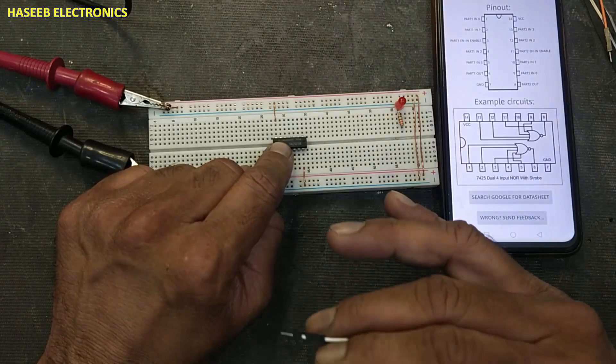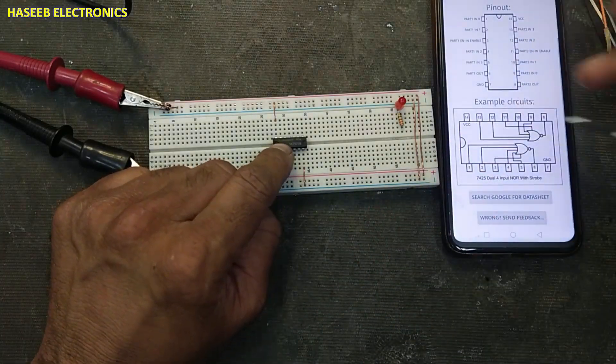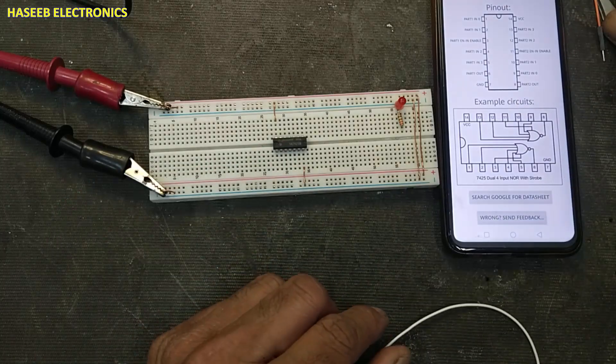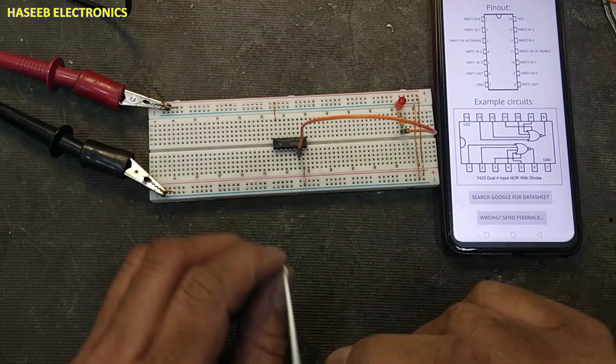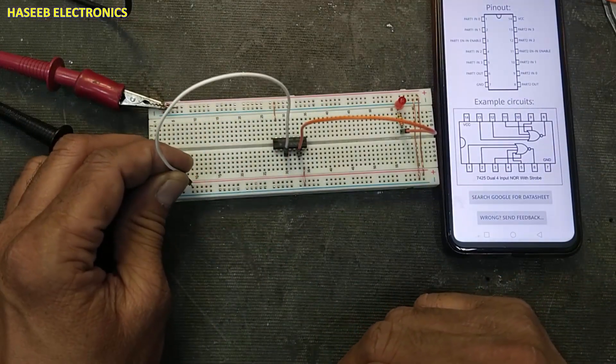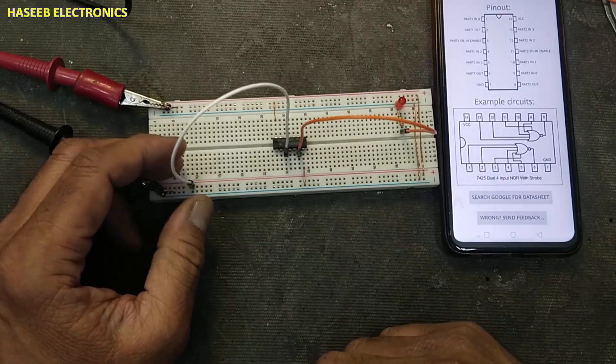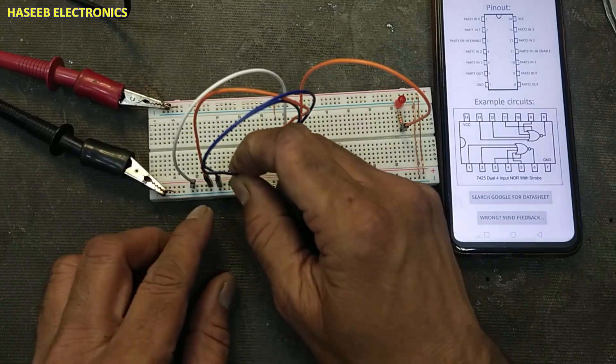Pin 14 positive 5 volt. VCC 4.7 to 5.25, 5 volt nominal. Pin number 6 output. Pin number 3 is strobe. That is control pin. I will place here at one side. Pin 1, pin 2, pin 4, pin 5.